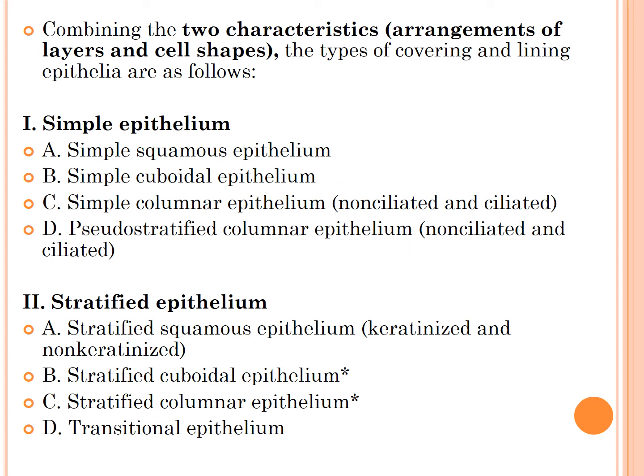Glandular epithelial makes up the secreting portion of glands such as the thyroid gland, adrenal gland, and sweat glands. Covering and lining epithelial tissue are classified according to two characteristics: one is arrangement of layers, and the second is shape of the cell.